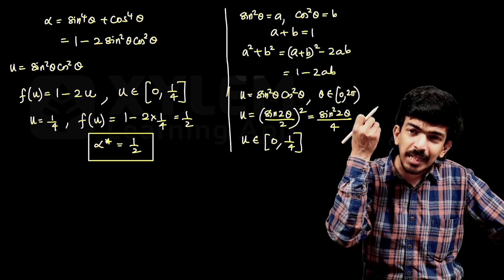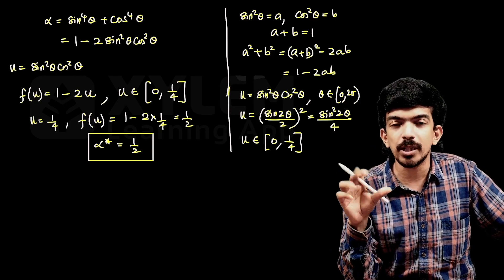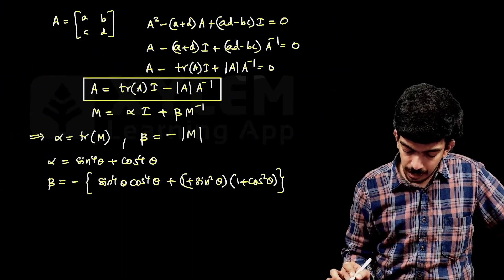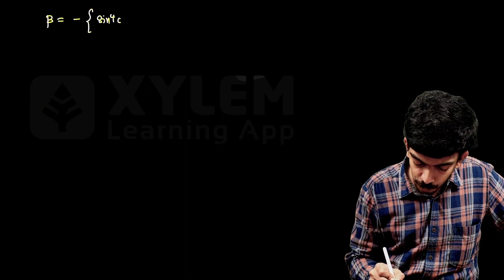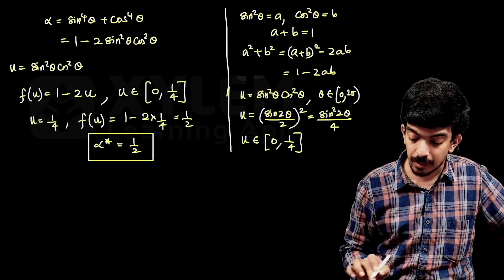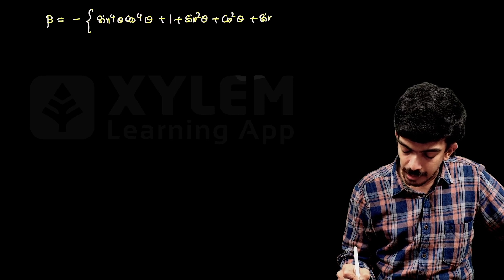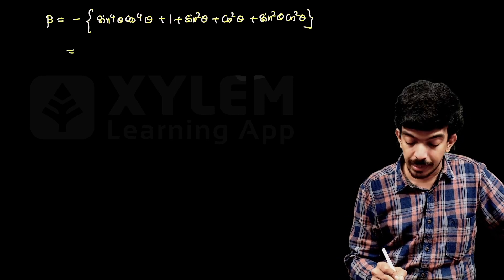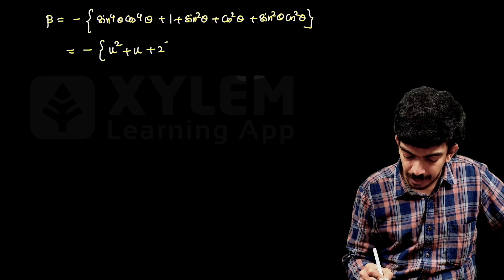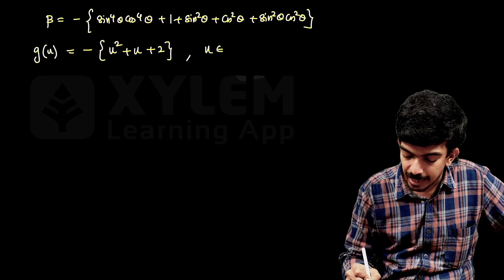Now for β(θ) = −[sin⁴θ · cos⁴θ + (1+sin²θ)(1+cos²θ)]. Expanding (1+sin²θ)(1+cos²θ) = 1 + cos²θ + sin²θ + sin²θcos²θ = 1 + 1 + u = 2 + u. So β = −[u² + u + 2], where u = sin²θcos²θ ∈ [0, 1/4]. This gives β = −(u² + u + 2).